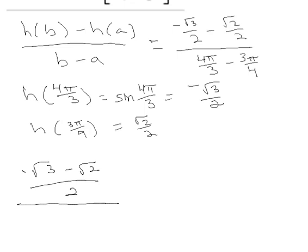So 4/3 with a common denominator, multiply that by 4/4, that's 16/12. Minus, multiply this by 3/3, 9/12. 16 minus 9 is 7π/12.